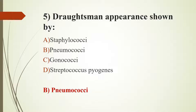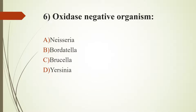Sixth question: Which is an oxidase-negative organism? Option A, Neisseria. Option B, Bordetella. Option C, Brucella. Option D, Yersinia. The answer is Option D, Yersinia.